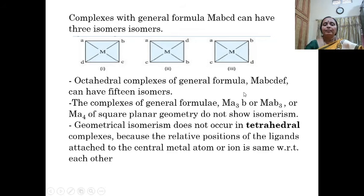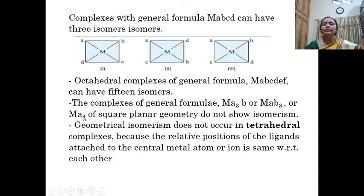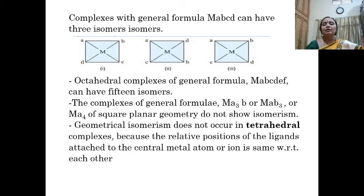Complexes with general formula MA₃B, MAB₃, or MA₄ of square planar geometry will not show isomerism. Geometrical isomerism is also not shown in complexes having tetrahedral geometry.